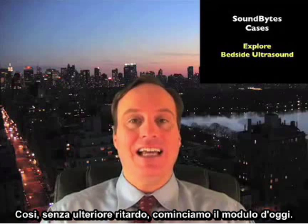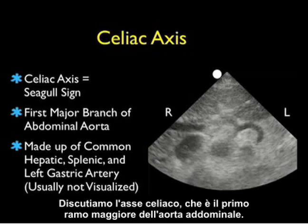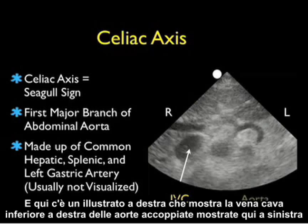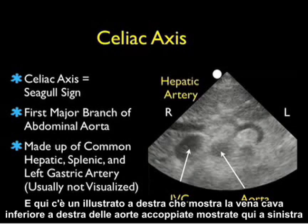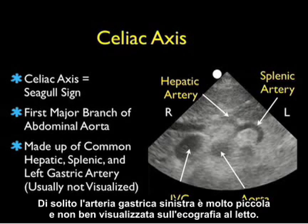So without further delay, let's get right into today's module. Let's discuss the celiac axis, which is the very first major branch of the abdominal aorta. Here's a pictorial showing the IVC to the right of the aorta, shown to the left. We note here the hepatic artery and splenic arteries, the major branches of the celiac axis. The left gastric artery is usually very small and not visualized well on bedside ultrasound.